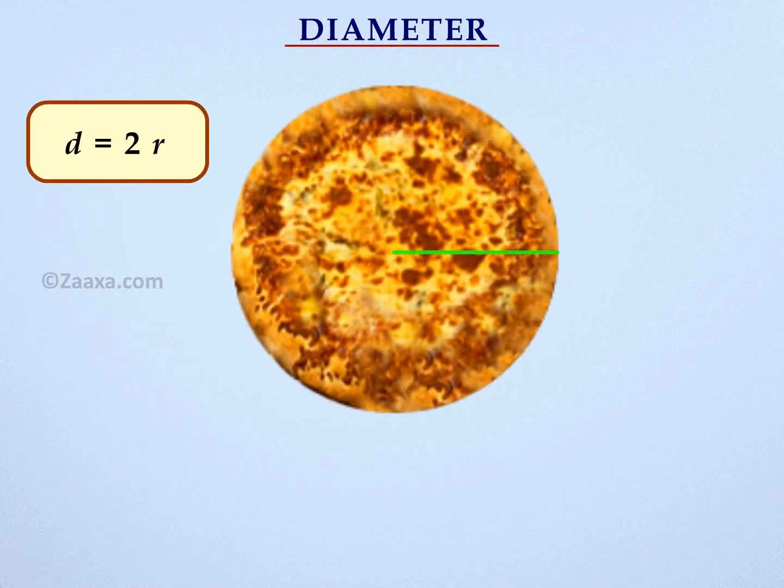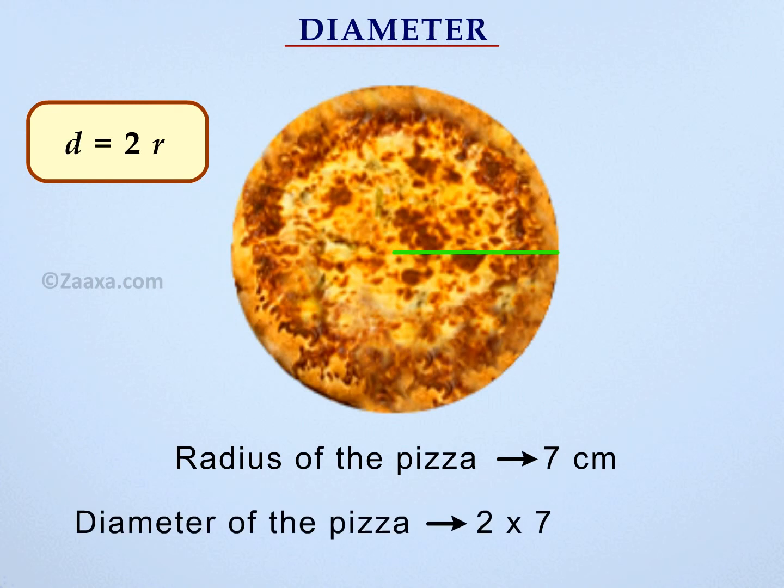Let us now find the diameter of a pizza which has a radius of 7 cm. We already learned that the diameter is twice the radius. Therefore, the diameter of the pizza is 14 cm.